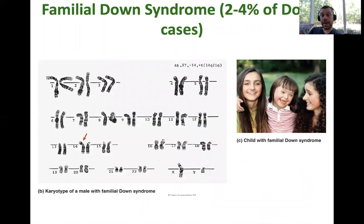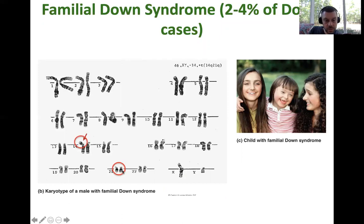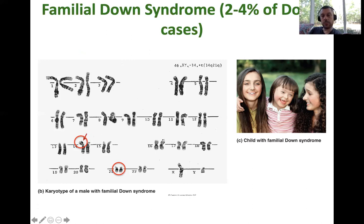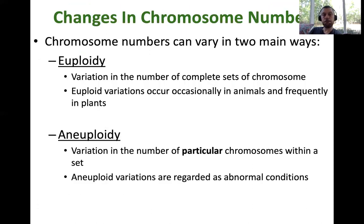Here's an example of a child with familial Down syndrome, who phenotypically looks just like a regular Down's individual with a whole extra copy of chromosome 21. You can see in the karyotype that chromosome 21 is very small, and if you look at one version of chromosome 14, you can see a thick band at the end because the long arm of chromosome 21 has become stuck onto chromosome 14.